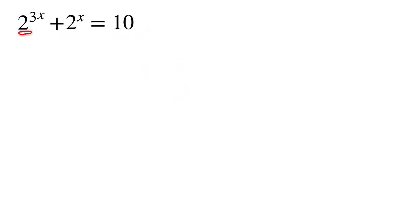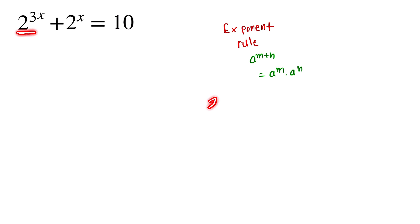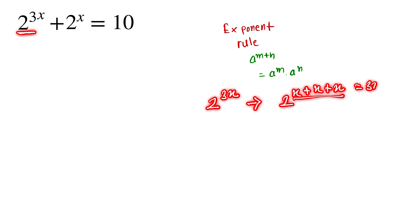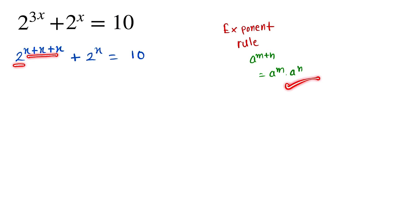Here, 2 to the power 3x — we use the exponent rule: a to the power m plus n can be written as a to the power m times a to the power n. So 2 to the power 3x can be written as 2 to the power (x + x + x), which equals 2 to the power x times 2 to the power x times 2 to the power x, plus 2 to the power x, equals 10.